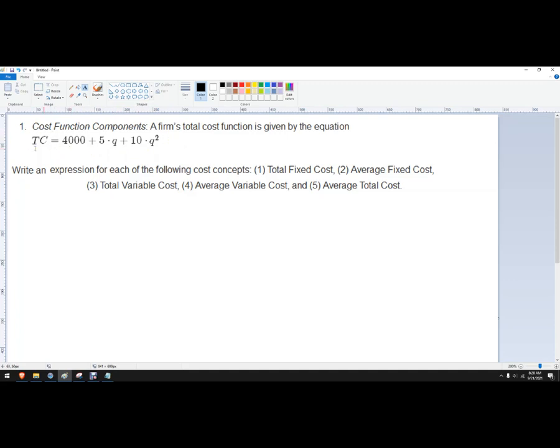So for example, if you wanted to know how much would the total cost be to produce 10 units, you would just plug in 10 as Q and then add up that number and that'll give you the total cost.